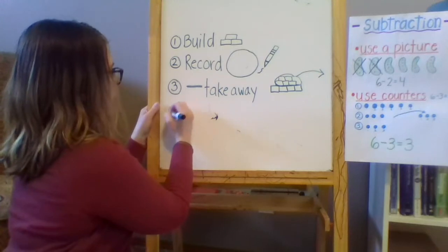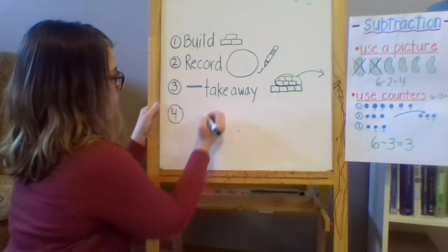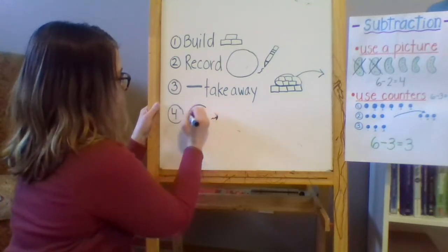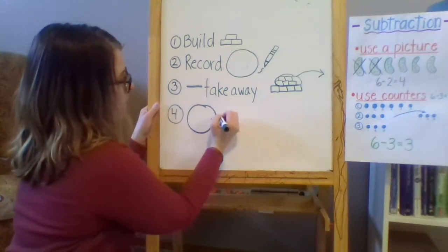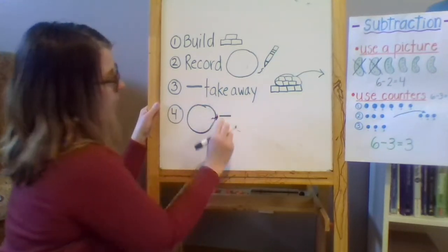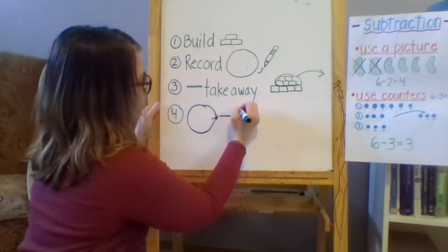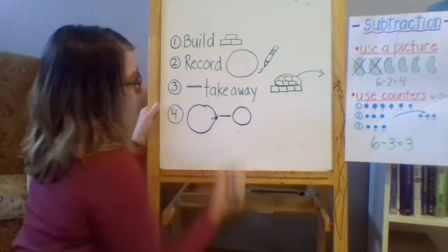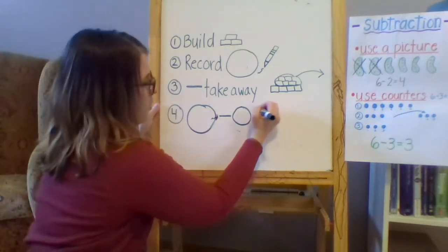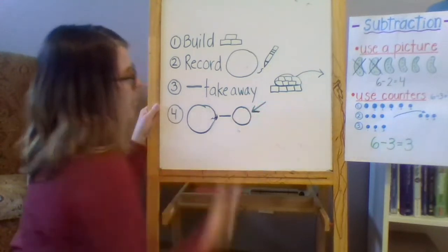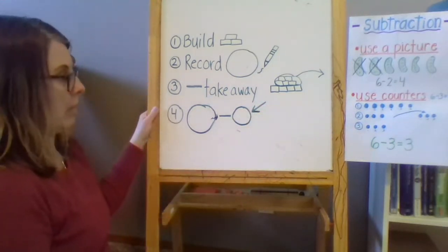Step number four is to record. So we should have recorded the whole before. Now we're going to record the takeaway. We're taking some away and the part. So record right here. How many are you taking away?